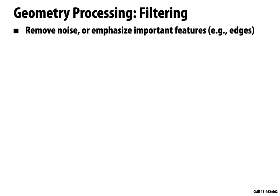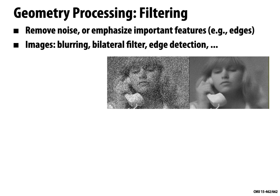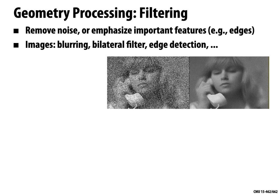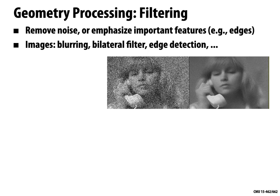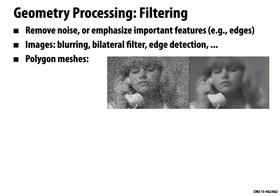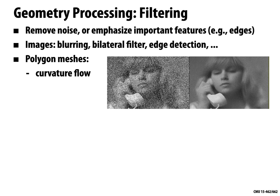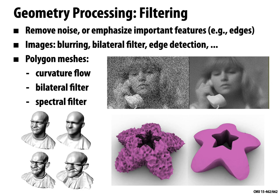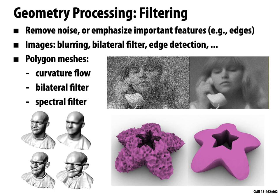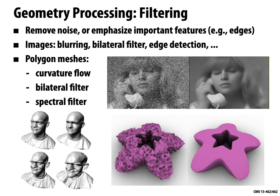Filtering is another common task — removing noise or emphasizing certain features. For images, we might blur or use bilateral filters. With polygon meshes, techniques like curvature flow, generalizations of bilateral filters, and spectral filtering are used to enhance features. For example, we can emphasize or over-emphasize features of a face model using spectral filtering.